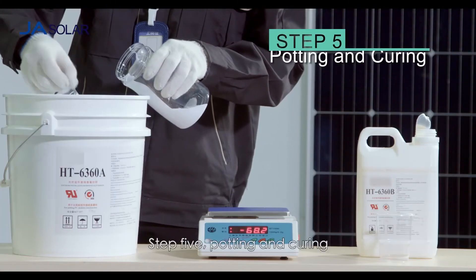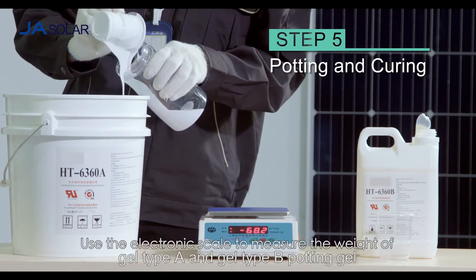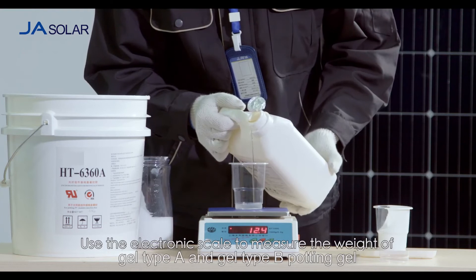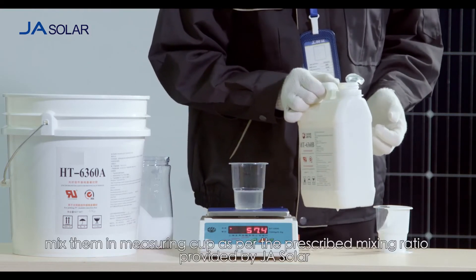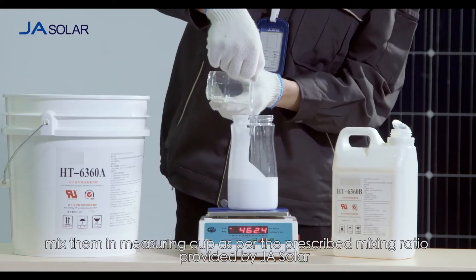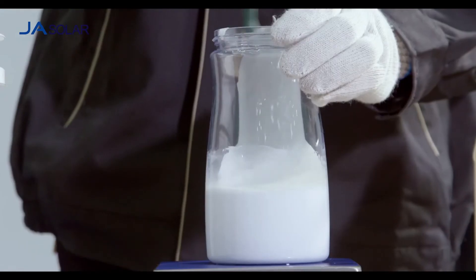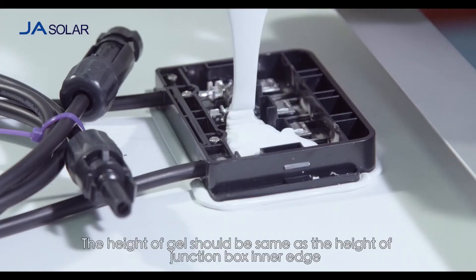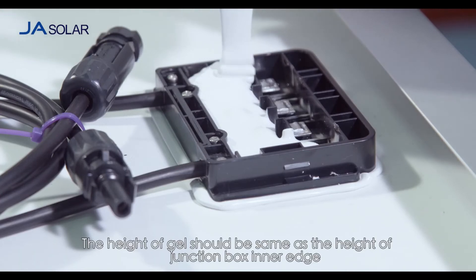Step 5: Potting and curing. Use the electronic scale to measure the weight of gel type A and gel type B potting gel. Mix them in measuring cup as per the prescribed mixing ratio provided by JA Solar. Then dispense the potting gel into the junction box. The height of gel should be same as the height of junction box inner edge.